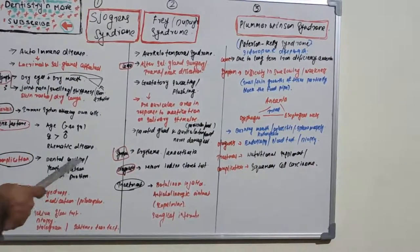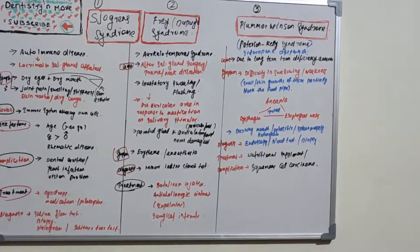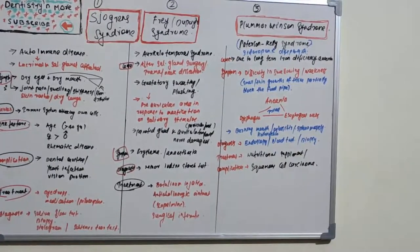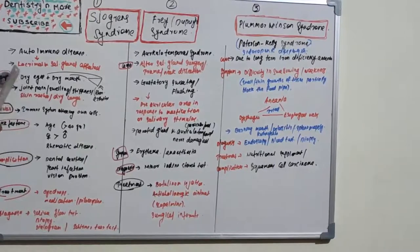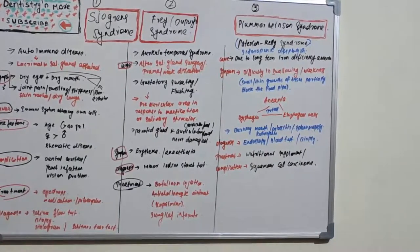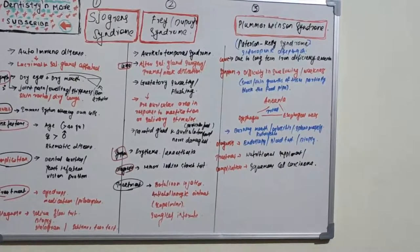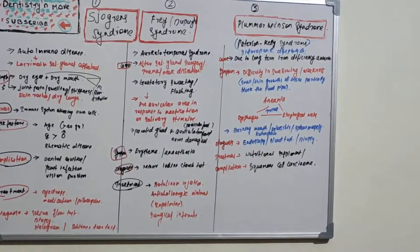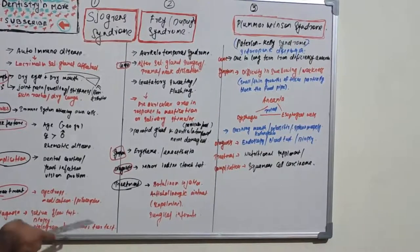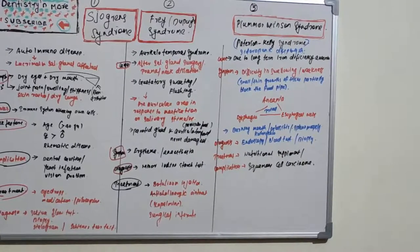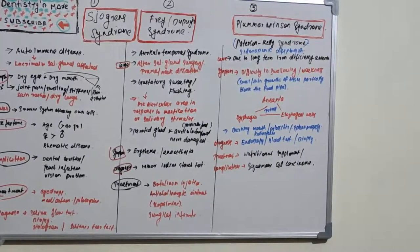Complications include dental cavities, because saliva keeps the mouth clean through its flushing action — when saliva is reduced there is more risk of caries. Yeast infections can also occur. Due to dry eyes there will be vision problems. Treatment is symptomatic: eye drops (also known as artificial or 'crocodile tears') and pilocarpine to improve saliva production.